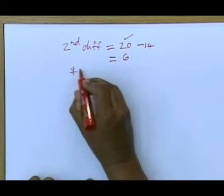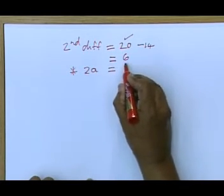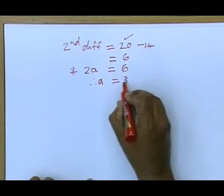And an important feature of the quadratic is that 2a, twice the value of a, equals the second difference. Therefore a is equal to 3.